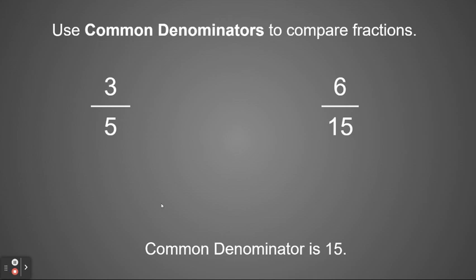So to do that, I'm going to find a common denominator of 15. So I need to multiply times 3. So I multiply my numerator times 3 and my denominator times 3. When I do that, I'm going to get a total of 9 fifteenths.